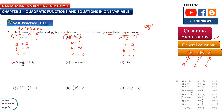Question 2d: minus half p squared. In front of p squared is negative half, so a is negative half. The number in front of p is 4, so b is 4. You don't have a constant, so c is 0.